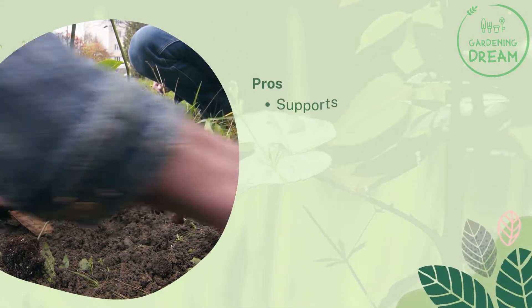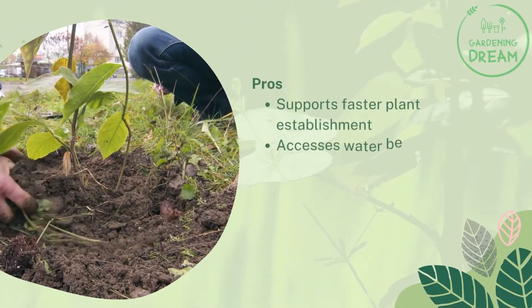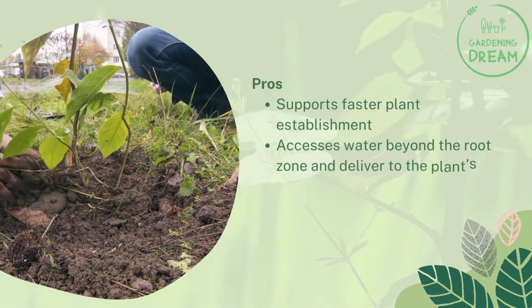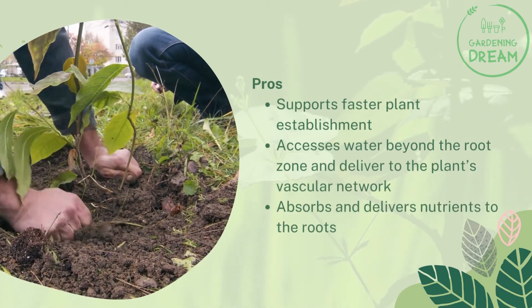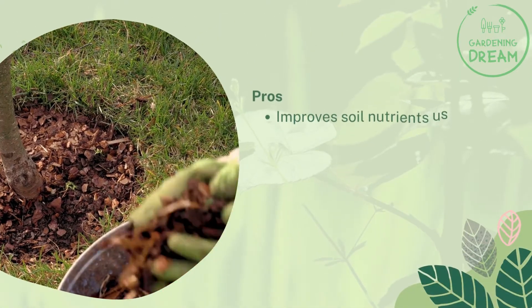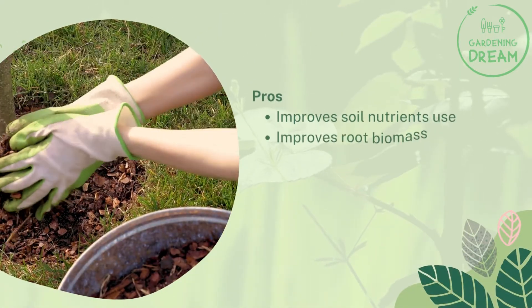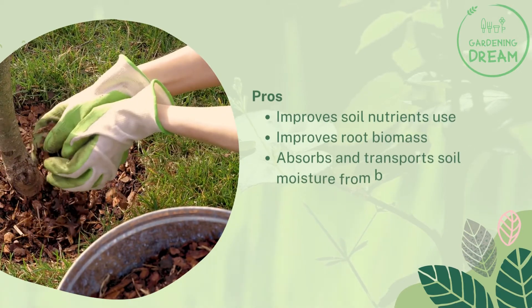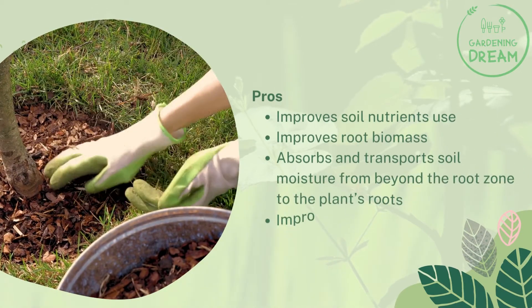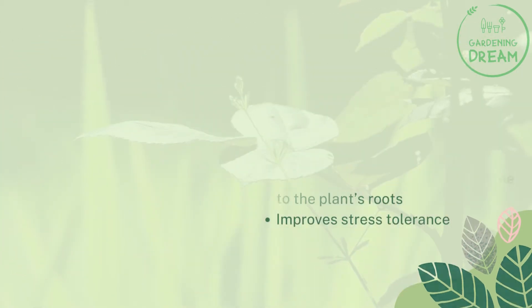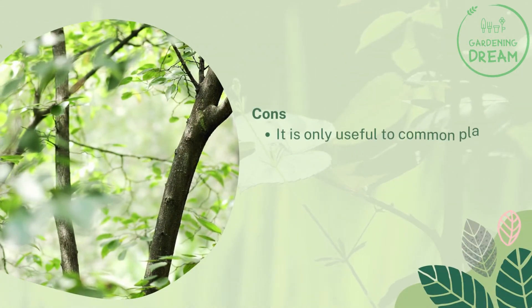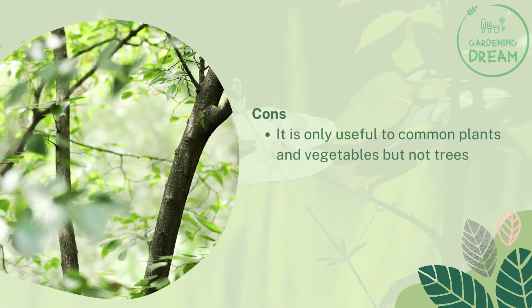Pros: supports faster plant establishment, accesses water beyond the root zone and delivers it to the plant's vascular network, absorbs and delivers nutrients to the roots, improves soil nutrient use, improves root biomass, absorbs and transports soil moisture from beyond the root zone to the plant's roots, and improves stress tolerance. Cons: it is only useful to common plants and vegetables, but not trees.